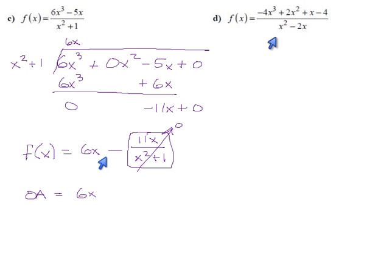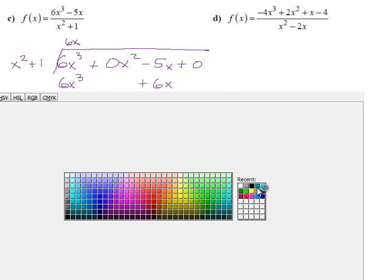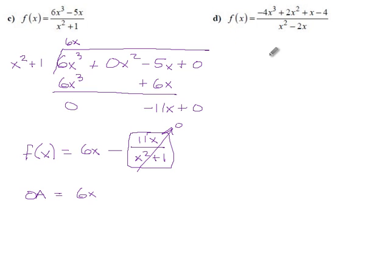Let's see if that happens again for this next one. I'll switch colors. Our function is minus 4x cubed plus 2x squared plus x minus 4. Divided by x squared minus 2x. Okay, x to the 3, 2, 1, 0, good. We won't get fooled again.